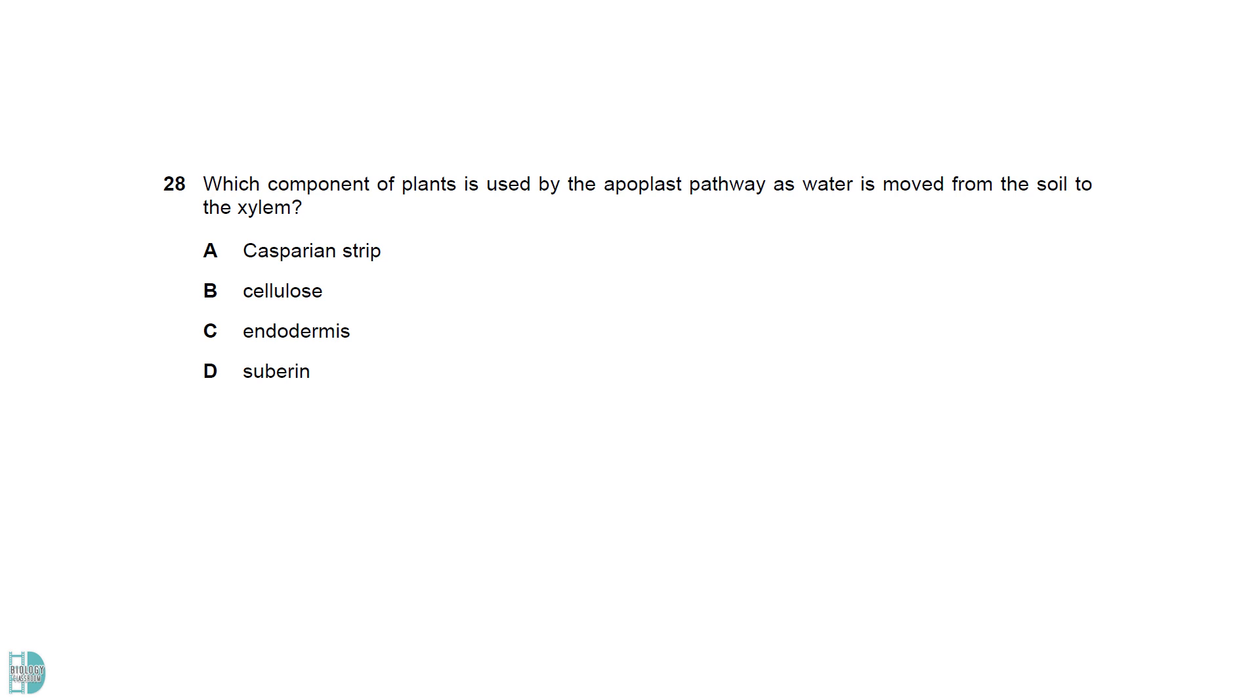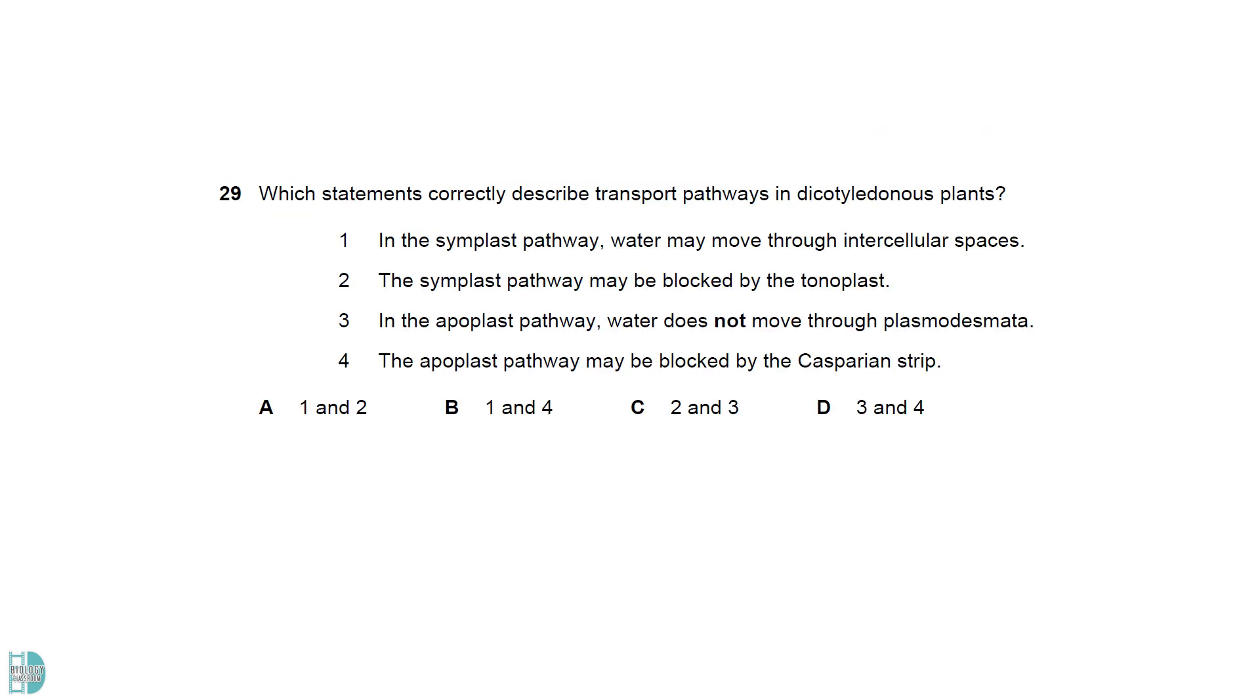In the apoplast pathway, water moves in the cell wall. So, the answer is cellulose. Water moves in the cytoplasm in the symplast pathway. They do not move out to the intercellular space between cells. They can move across the tonoplast and enter the vacuole. Water won't be blocked by the membrane.